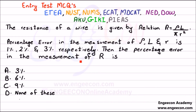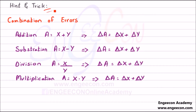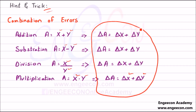Here we have an entry test MCQ. The resistance of a wire is given by R = ρL / πr². The percentage error in measurement of ρ, L, and r is 1%, 2%, and 3% respectively. Find the percentage error in the measurement of R. A key point: irrespective of addition, subtraction, division, or multiplication, we always add the errors and uncertainties.